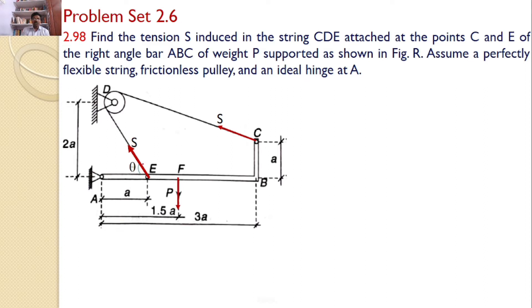Now in order to proceed, let theta is the angle made by this string with the horizontal and let alpha is the angle made by this string with the horizontal. By considering a small right angle triangle here, this right angle triangle and also by considering this right angle triangle, I can find the values of alpha and theta.